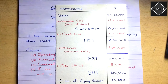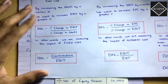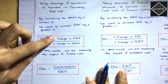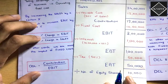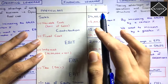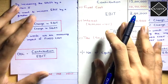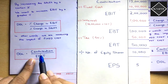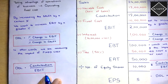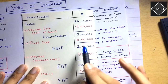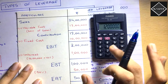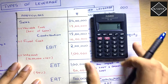Now let's use the formulas. For operating leverage, we use the simple formula: contribution divided by EBIT — no need for the percentage change formula here since we have only one column. Operating leverage (DOL) = contribution ÷ EBIT = 12 lakh ÷ 2 lakh = 6 times.